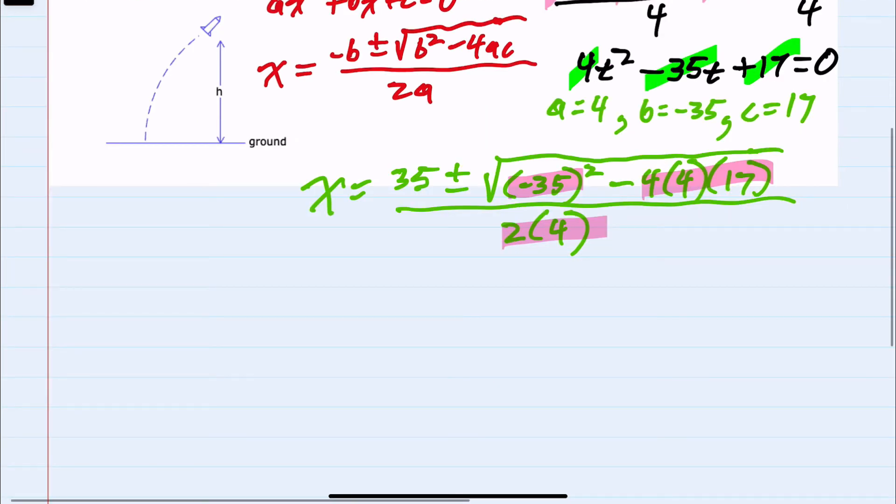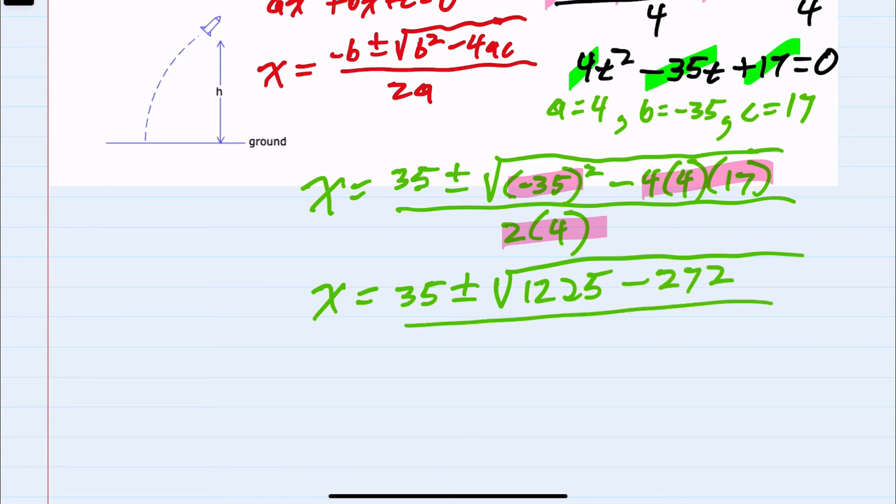We would have x equals 35 plus or minus the square root of—negative 35 squared is 1225, minus 4 times 4 is minus 16, times 17 is minus 272—and then in the denominator 2 times 4 is 8. Now simplifying the radical, x is 35 plus or minus the square root of 953 over 8.